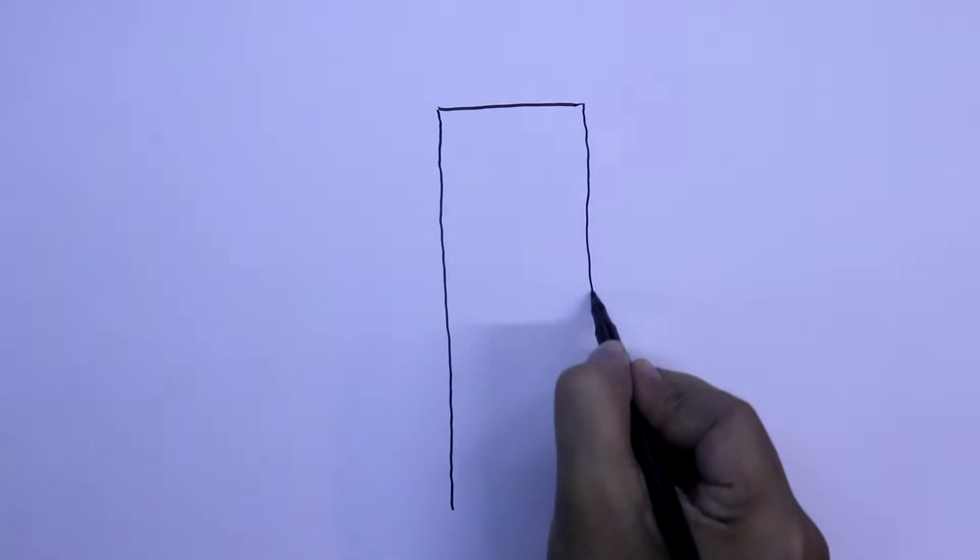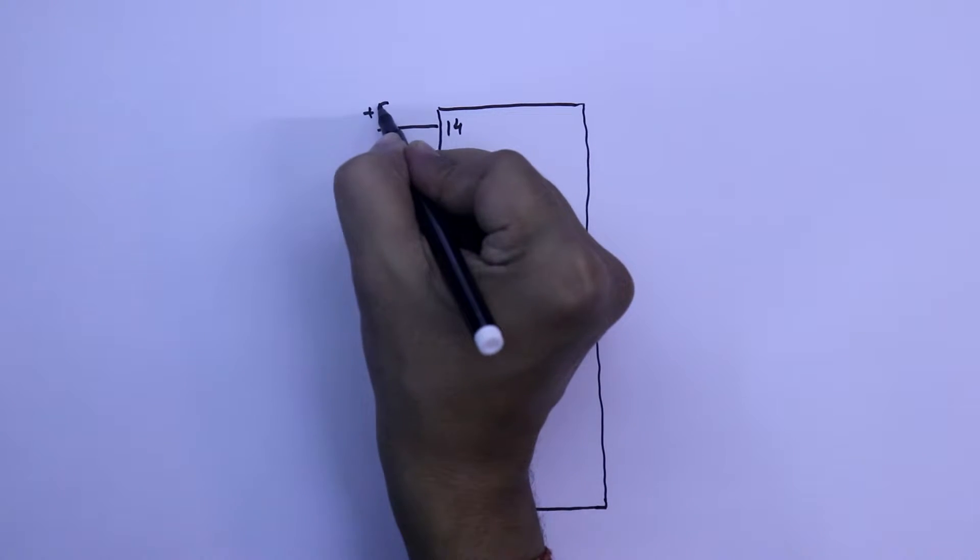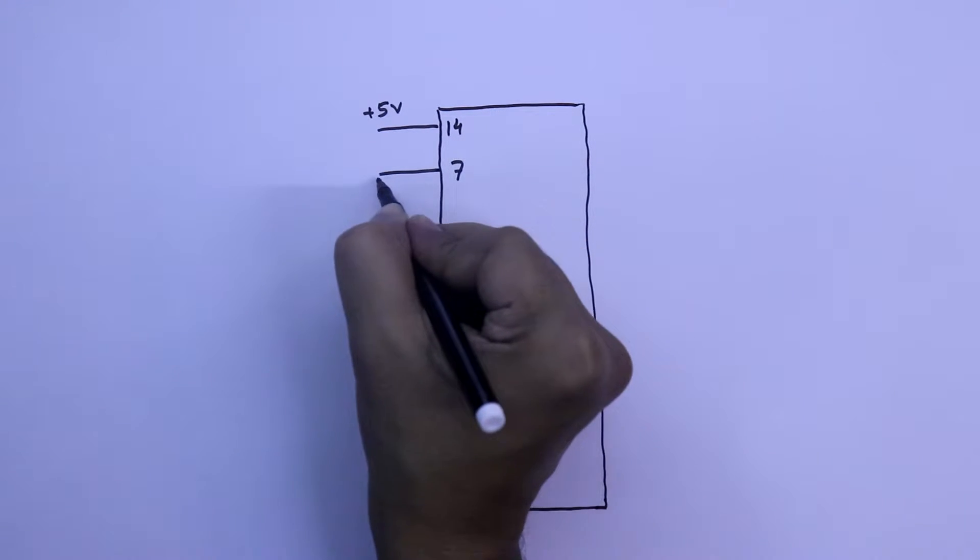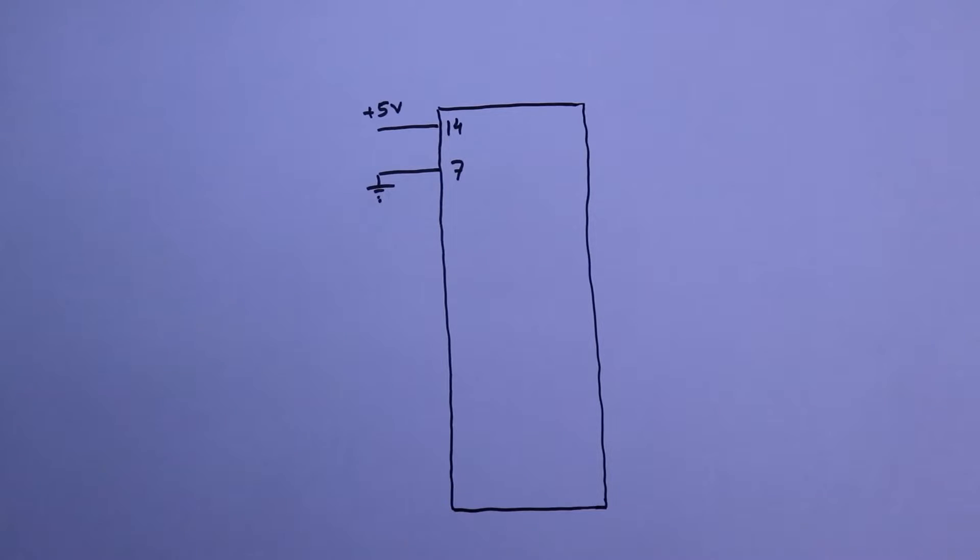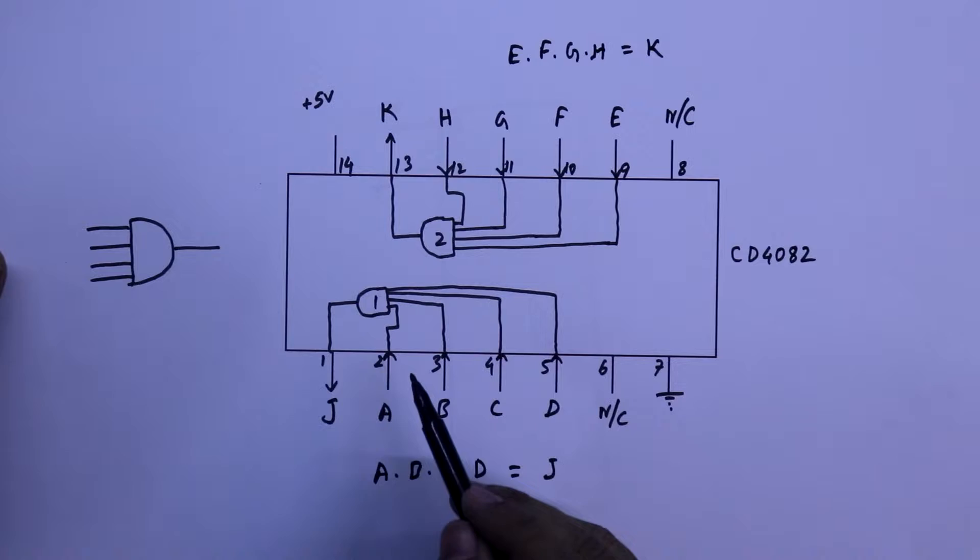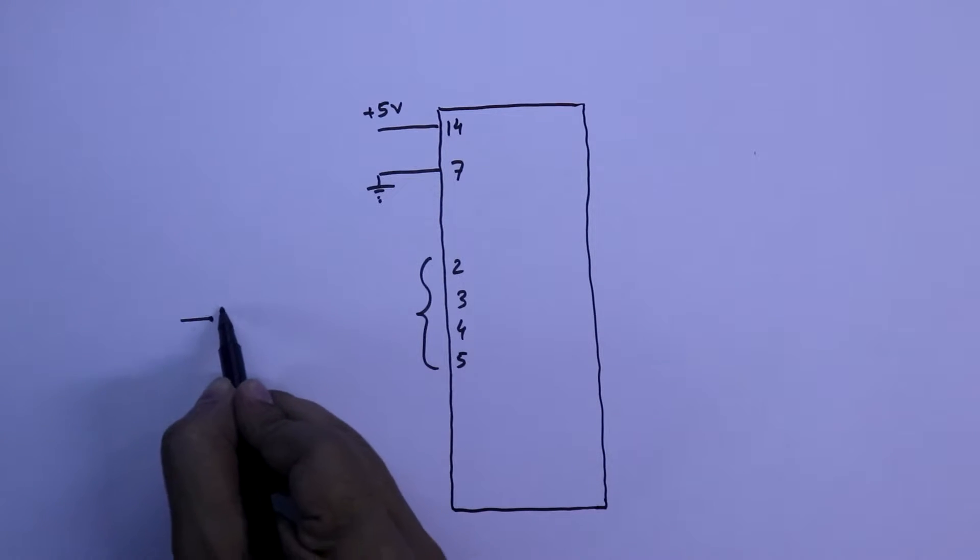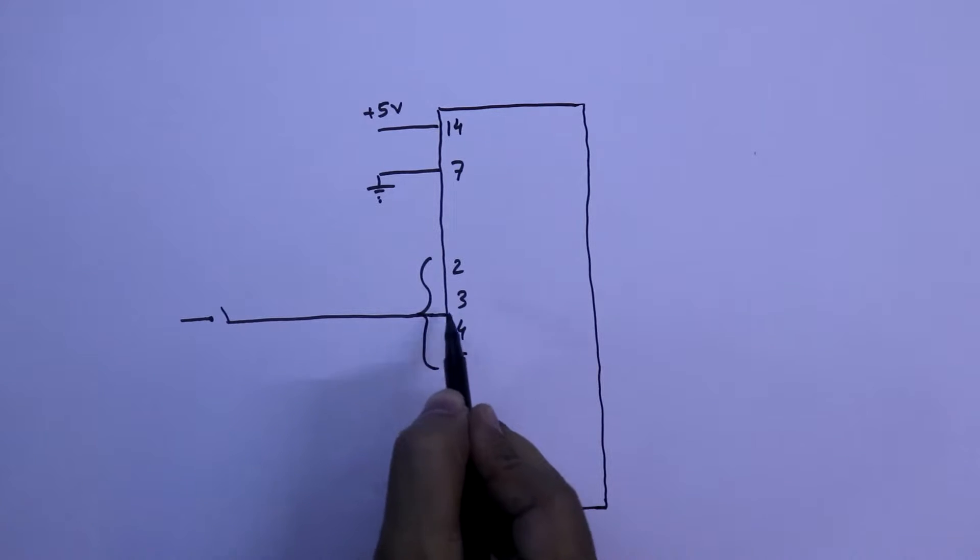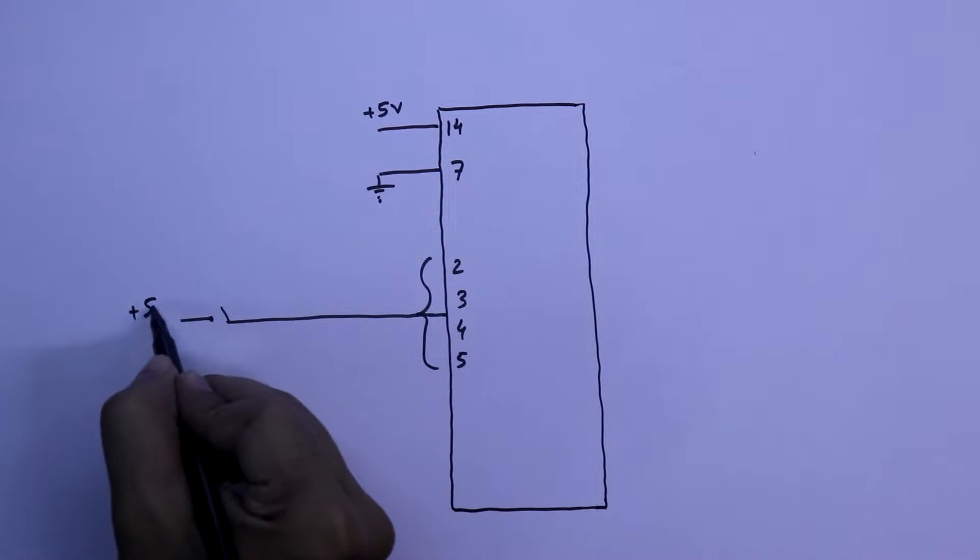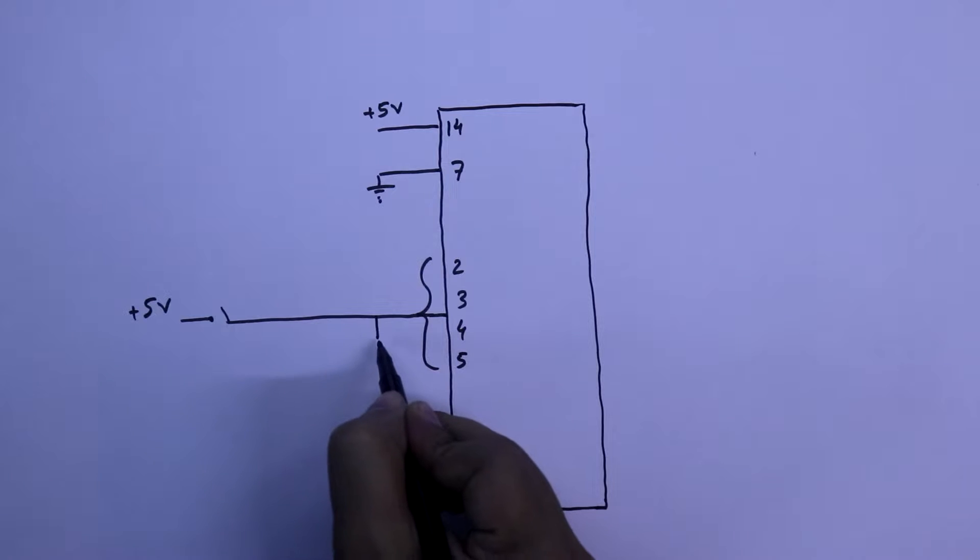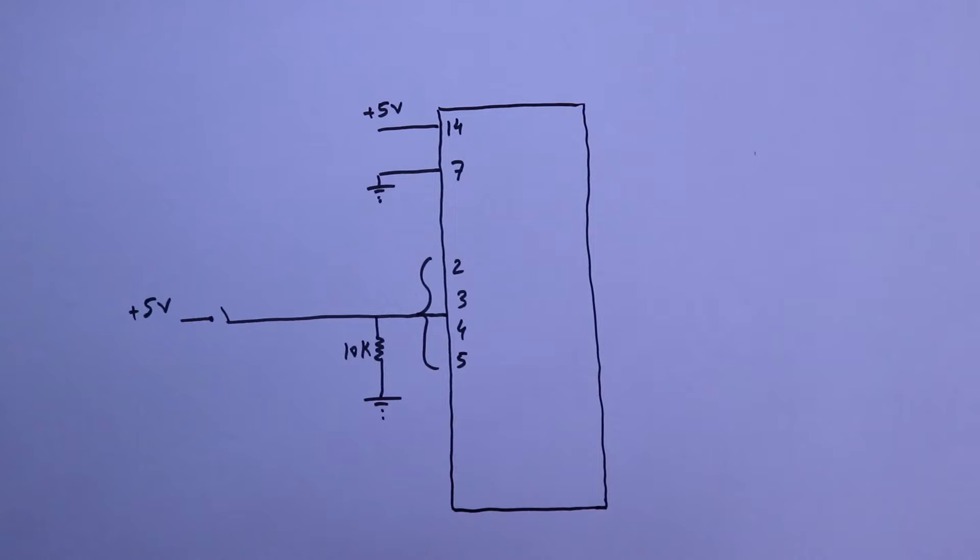Here is our IC. Pin number 14 is connected to the plus 5V and pin number 7 is connected to the ground. The input pins, that is pin 2, 3, 4, 5, with all of them I am going to connect a switch. And the other side of the switch is connected to the plus 5V. As it is a digital IC, so we have to connect a pull down resistor. The value of this is 10 kilo ohms. I already explained why should we connect this resistor.